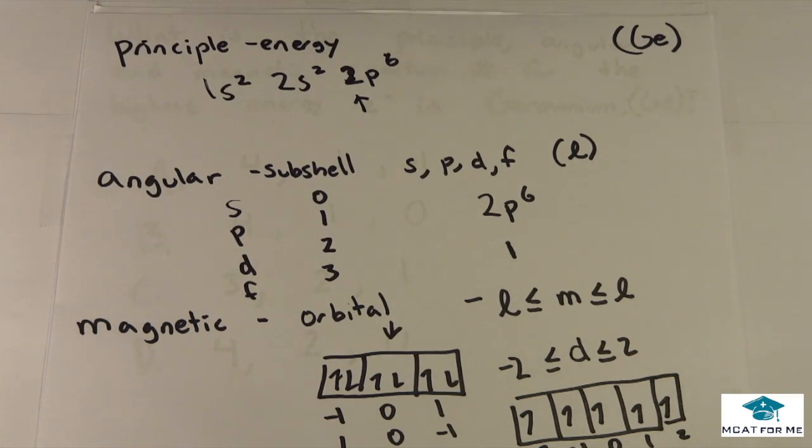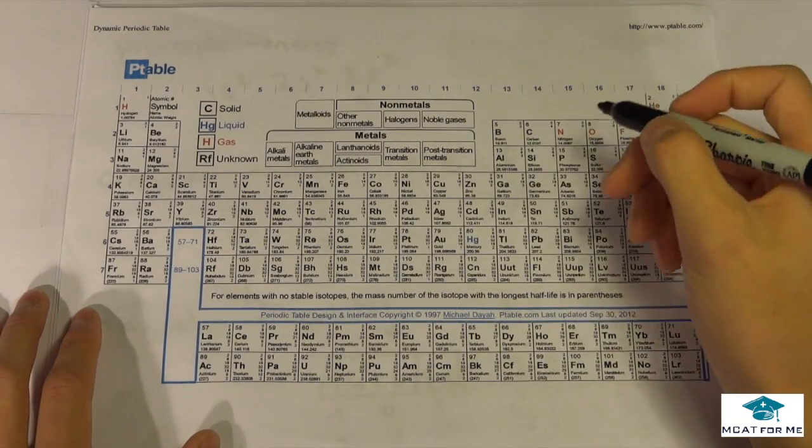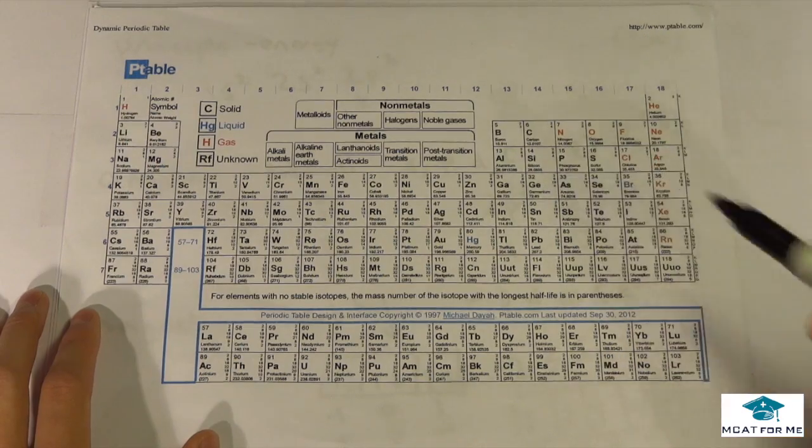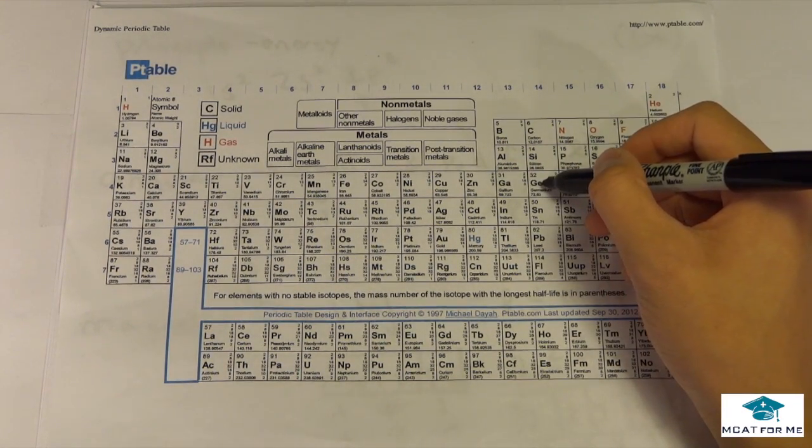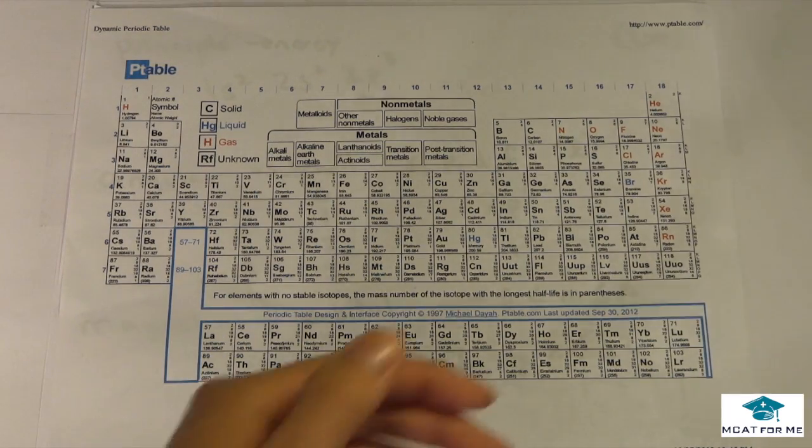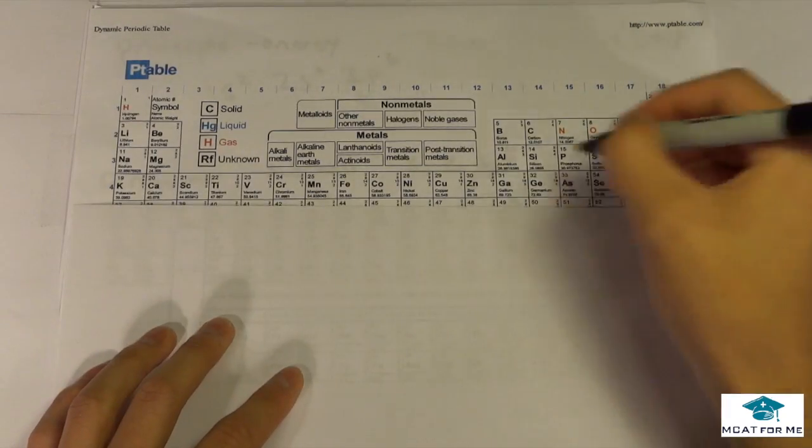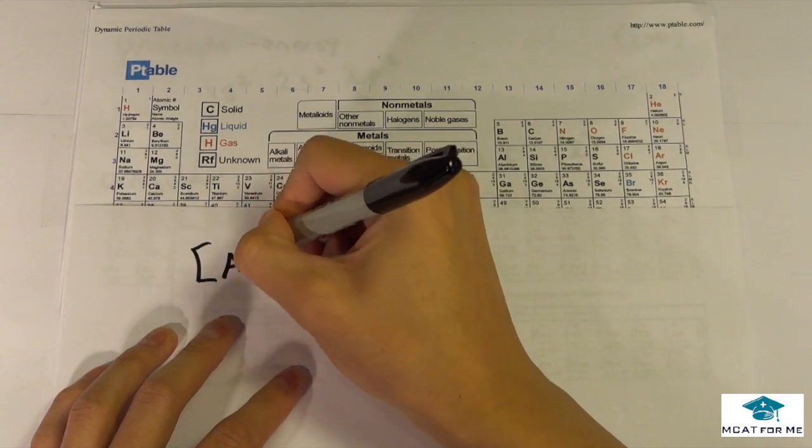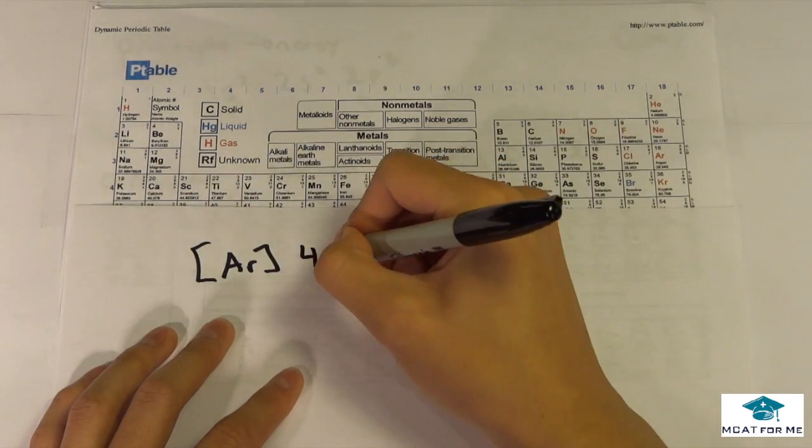So now we want to look at germanium. So germanium is right here. Germanium is right there. So germanium has a proton number of 32. So what would its electron configuration be? So we know that germanium, we'll just take the abbreviated electron configuration, with the Ar as the noble gas. Then we go 4s2.